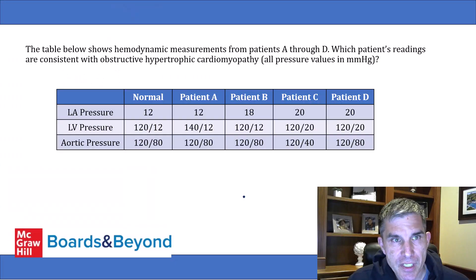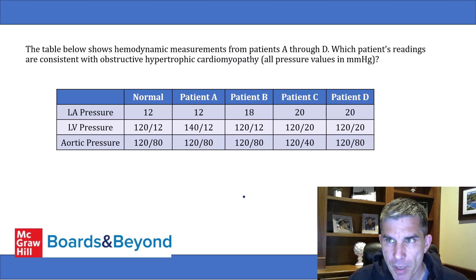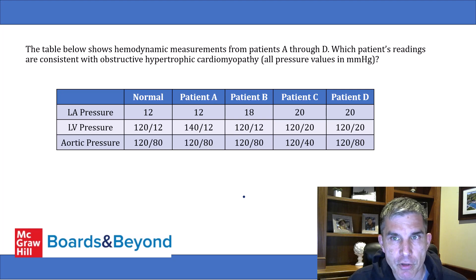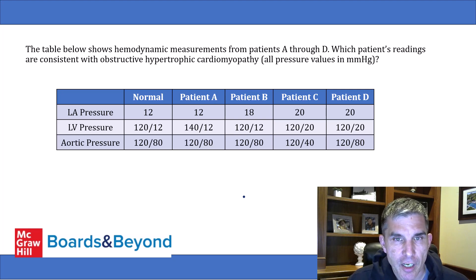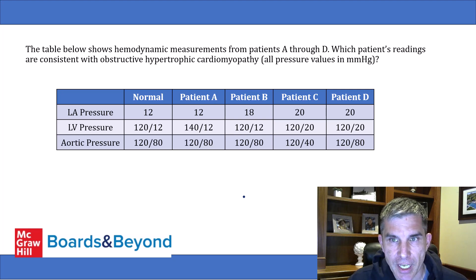The question says: the table below shows hemodynamic measurements from patients A through D. Which patient's readings are consistent with obstructive hypertrophic cardiomyopathy? We've got a table of values for left atrial pressure, left ventricular pressure, and aortic pressure, with normal values and values for patients A through D.